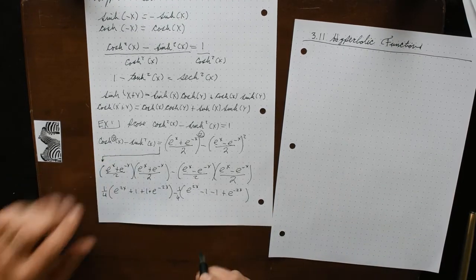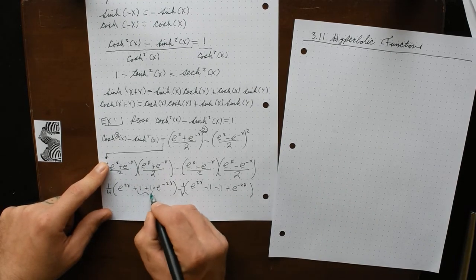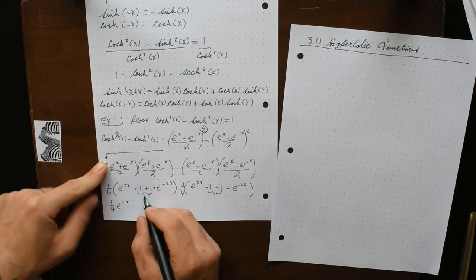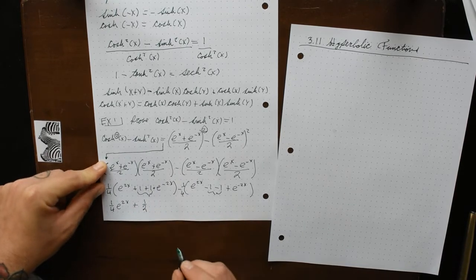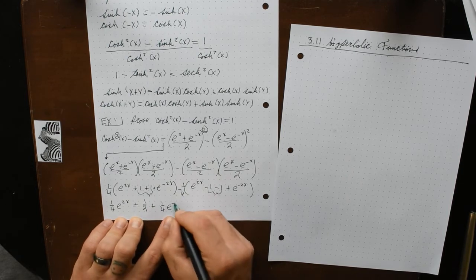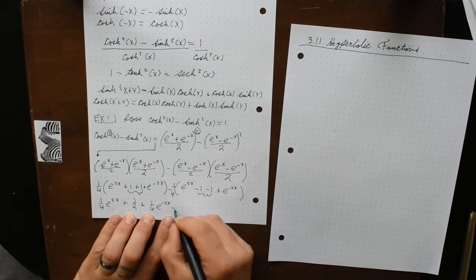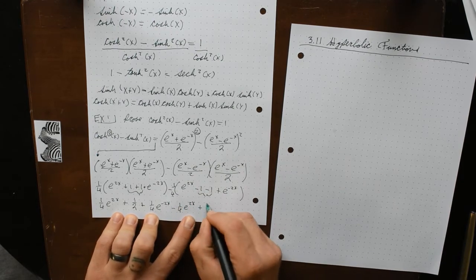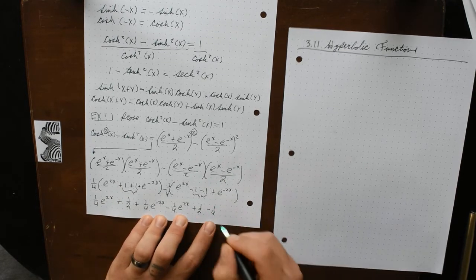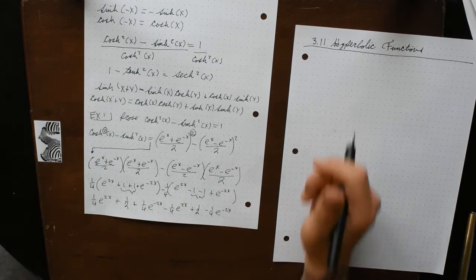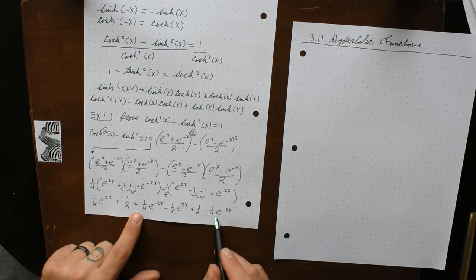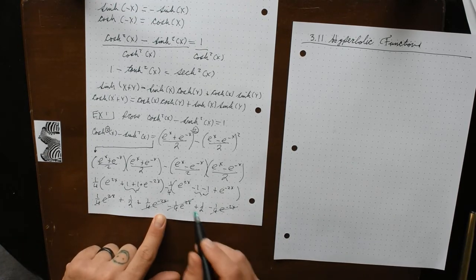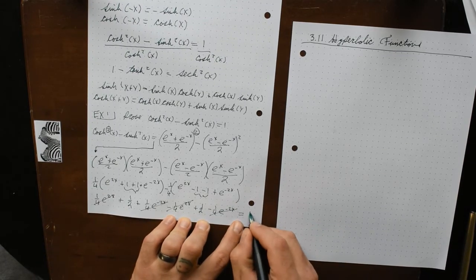Distributing the 1/4 and combining like terms: 1/4·e^(2x) + 1/2 + 1/4·e^(-2x) minus 1/4·e^(2x) plus 1/2 minus 1/4·e^(-2x). The e^(2x) and e^(-2x) terms cancel, and 1/2 plus 1/2 equals 1. So we have proven this identity by returning to the exponential definitions.